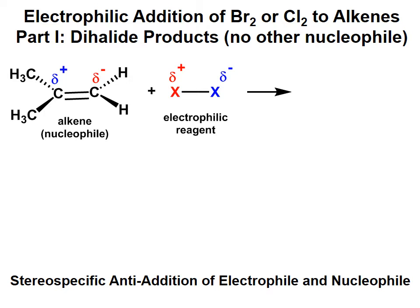Notice the alkene we have here with the carbons labeled. The more substituted carbon has a partial negative charge. If you're having trouble identifying the partial positive and partial negative charges, look at the number of hydrogens. The sp2 carbon with the fewest hydrogens — actually zero — that's your partial positive. The carbon with the most hydrogens attached is your partial negative. As the electrophilic reagent Br2 or Cl2 approaches the alkene, you get a momentary dipole where one bromine is more positive (the electrophile) and the other bromine more negative, acting as the nucleophile.